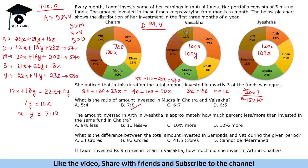Question 2: The amount invested in Earth in Jayst is approximately how much percent less or more than invested in the same fund in Chaitra? Earth in Jayst = 16z = 16 × 12 = 192. Earth in Chaitra = 25x = 25 × 7 = 175. The difference is 17, which is 17/175 ≈ 10% more.